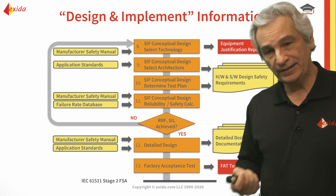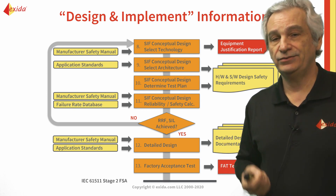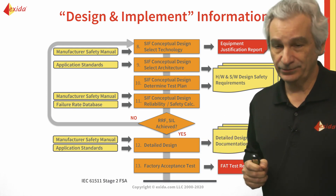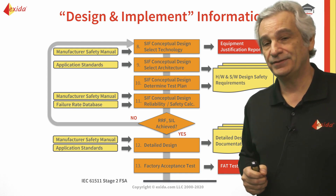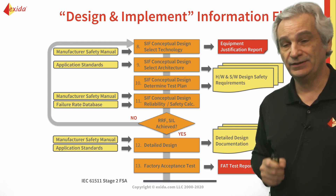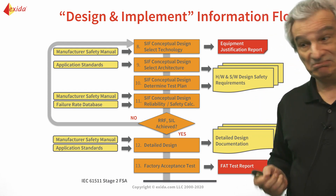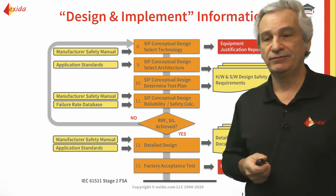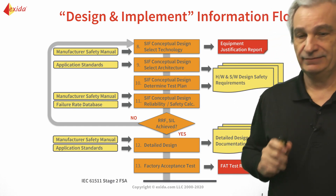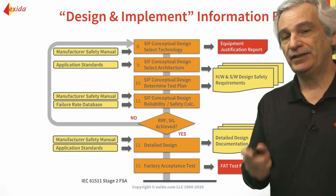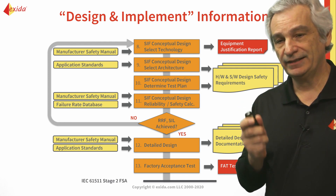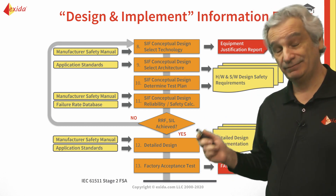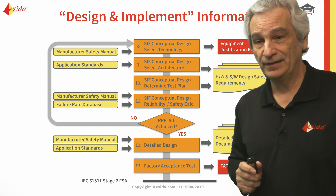The second method is through a prior use justification. When we get into that part of the course we'll go into these requirements in more detail. Those are the only two methods we can use — 'because I like the equipment' is not acceptable. We have to have a properly justifiable reason for using this equipment. We also need to make sure we think about and cover the systematic requirements, which I'll talk about a bit later on.